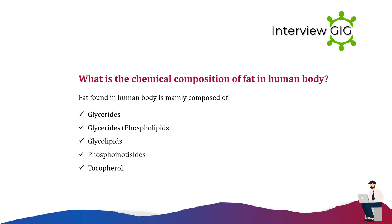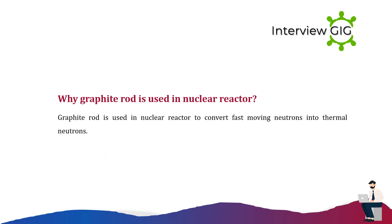What is the chemical composition of fat in the human body? Fat found in the human body is mainly composed of glycerides, phospholipids, glycolipids, phosphoinositides, and tocopherol. Why is a graphite rod used in a nuclear reactor? Graphite rods are used in nuclear reactors to convert fast-moving neutrons into thermal neutrons.